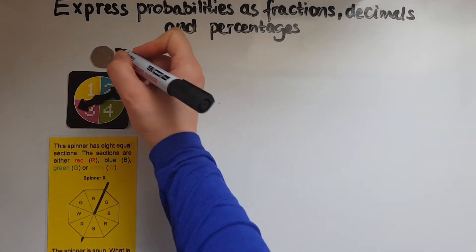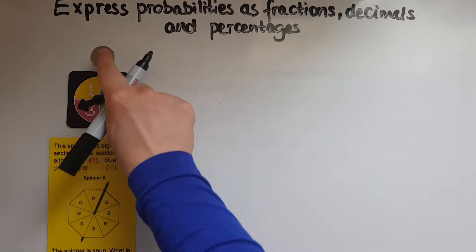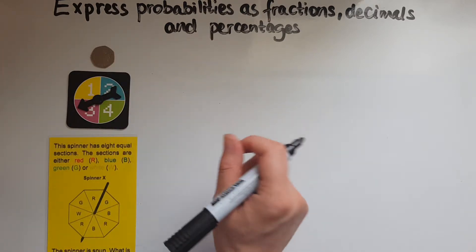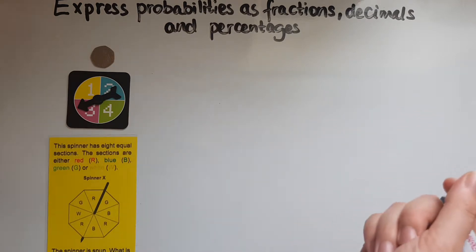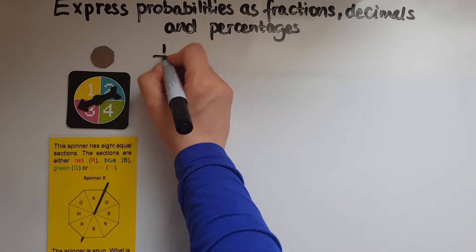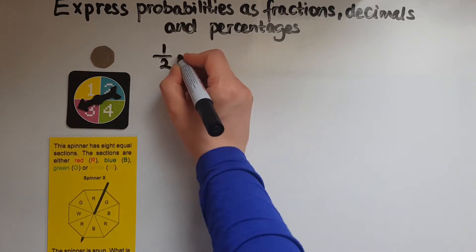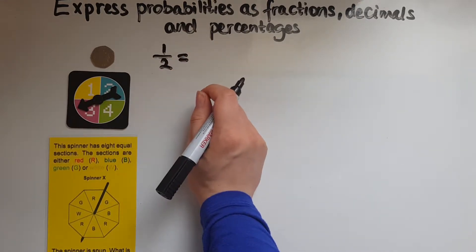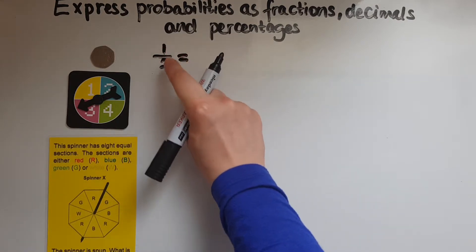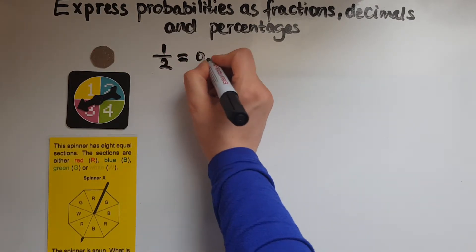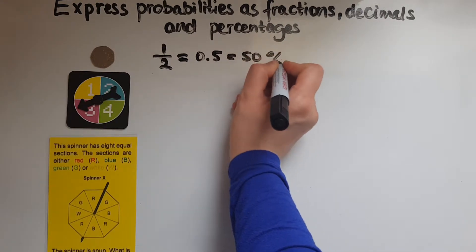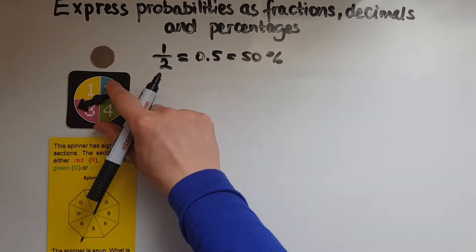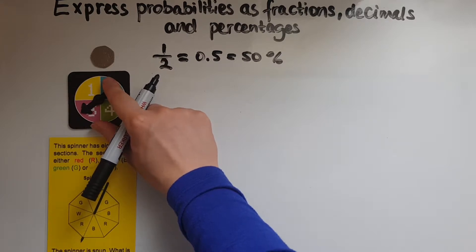I want to work out the probability of getting heads in a coin. The two different outcomes I could have is either heads or tails. So heads is just one of them out of the two. Now that's written as a fraction. As a decimal, 1 divided by 2 gives me 0.5, which is the same as 50%.